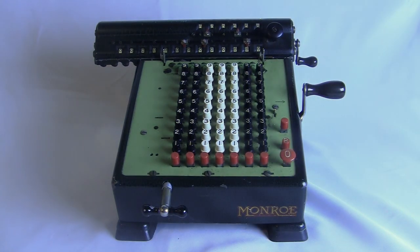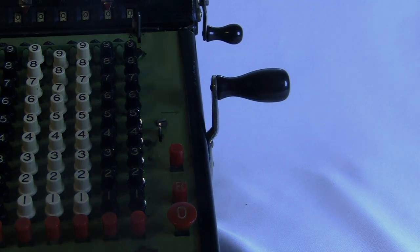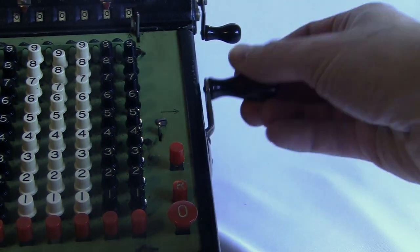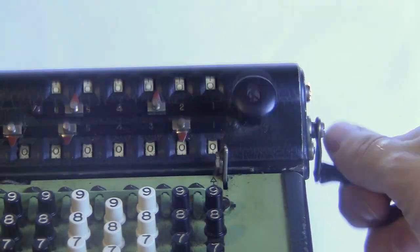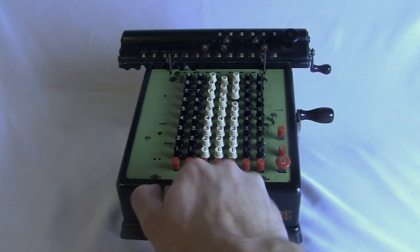On the mechanical L series, you had three cranks. This one for adding and subtracting - you go forward to add and backward to subtract. This one to clear the two registers, and this one to shift the digits.